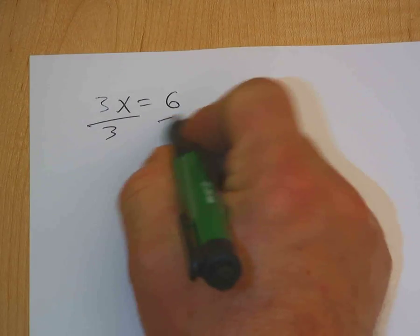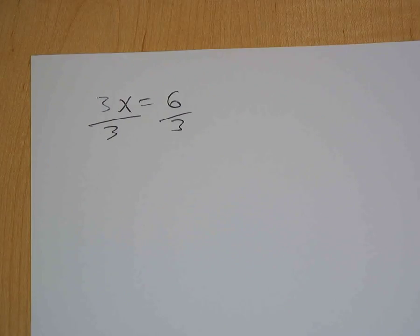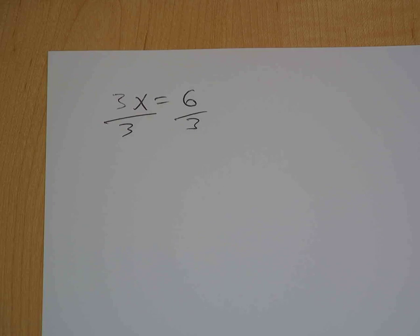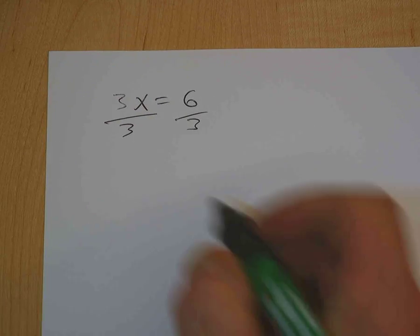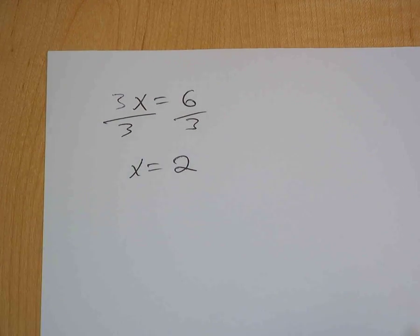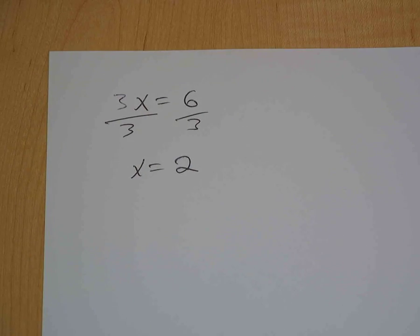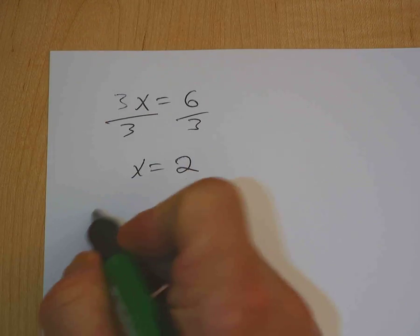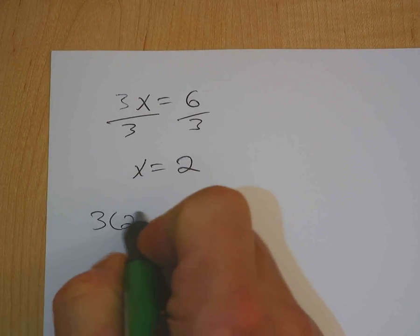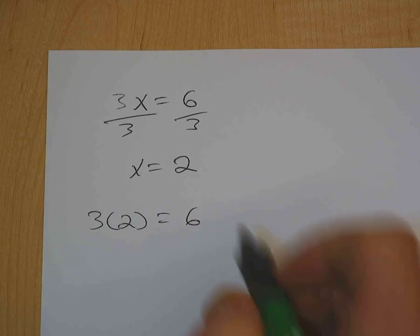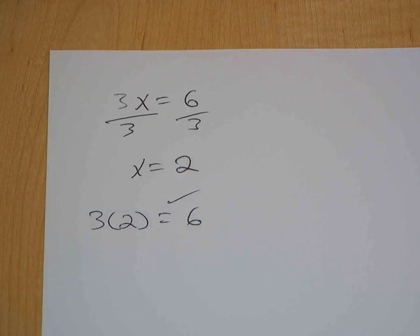You would divide each side. You undo multiplication by division — divide each side by 3, and we get x equals 2. And then if we're good math students, we take our answer, put it back in the original equation to check our work, and we find out that it does check.